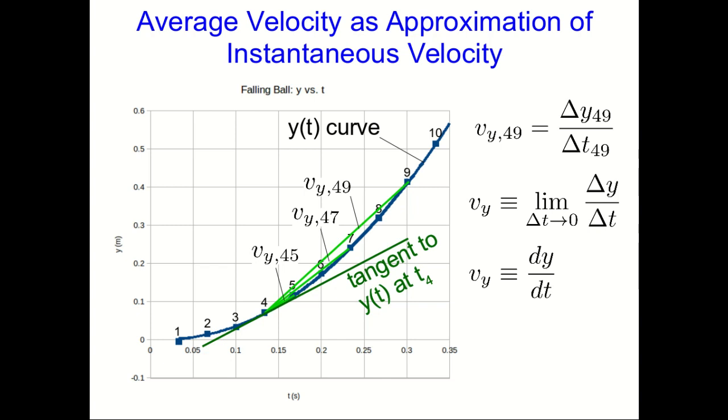And so we are imagining that we can describe, we can model our data with a function, y of t, and that we know how to extract from that function the slope of its tangent line at any t. That new function that gives us the slope is called the derivative.